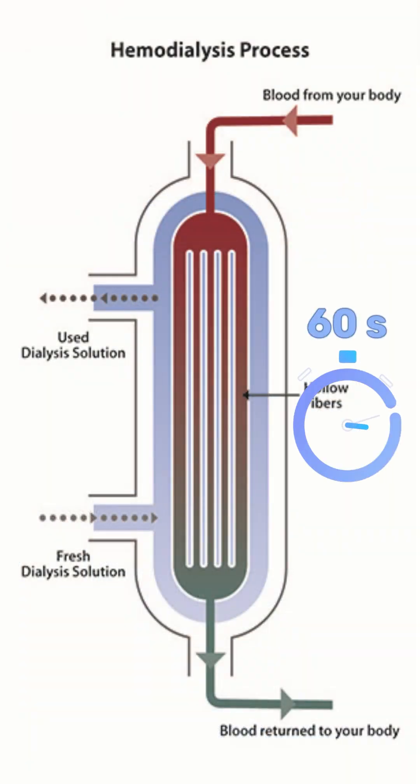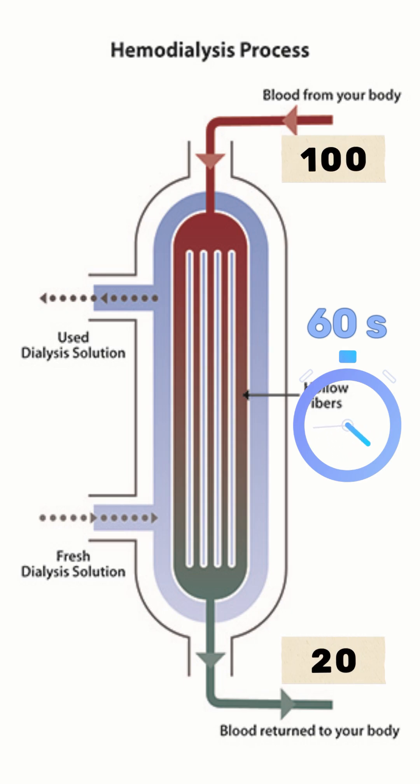Now imagine slowing the blood to 100 ml per minute. The same 100 ml now sits inside the dialyser for a full 1 minute. With this extra contact time, the extraction ratio goes higher — maybe around 75 to 85%, depending on the dialyser.